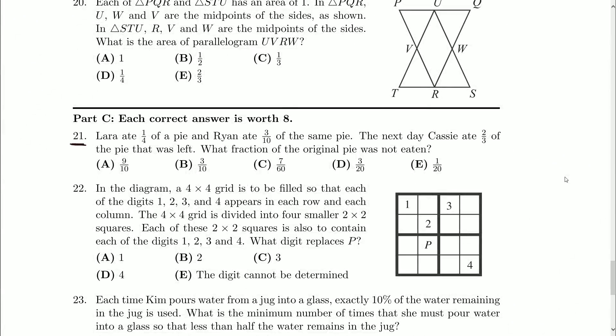Laura ate one quarter of a pie. Ryan ate three tenths of the same pie. Okay, so if we added up these two fractions, we can figure out how much of the pie Laura and Ryan ate together. The next day, Cassie ate two thirds of the pie that was left.